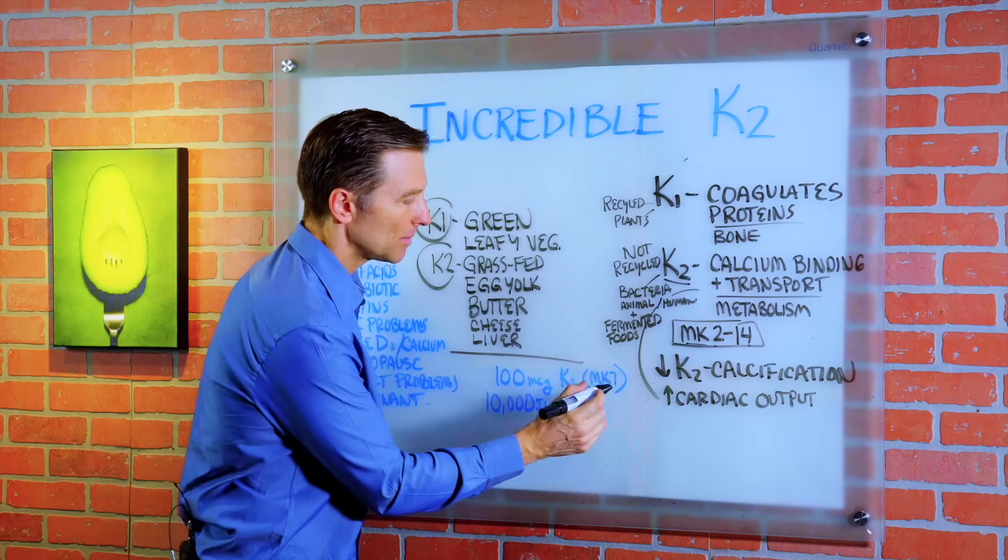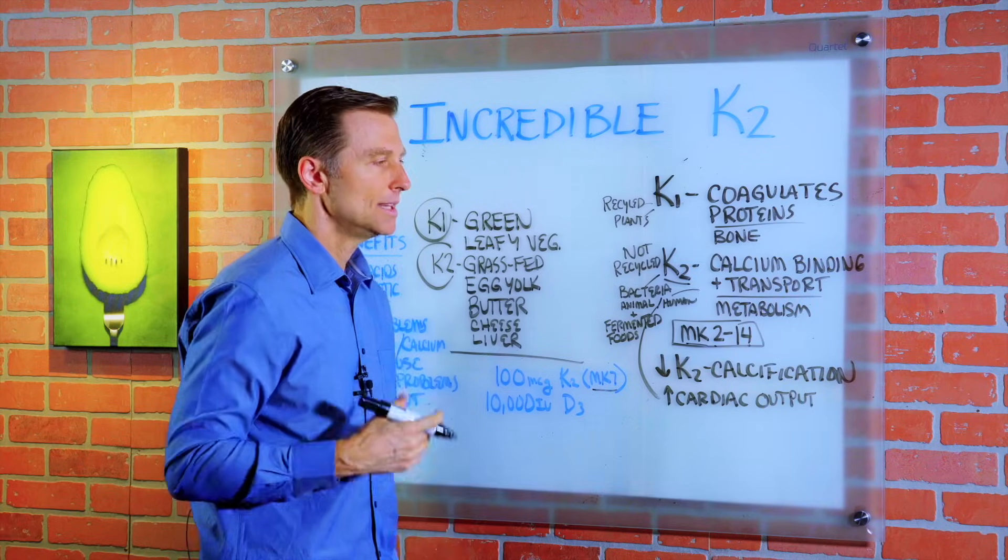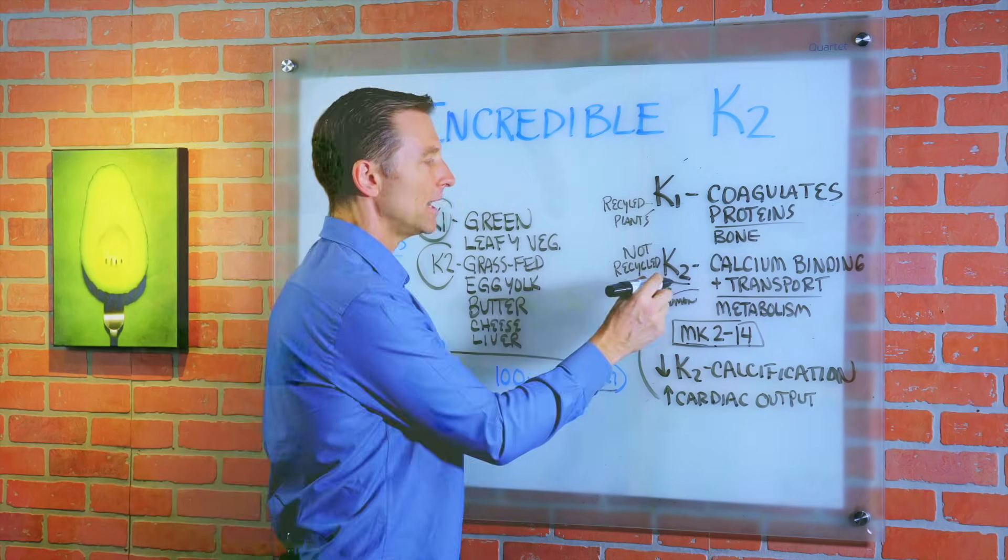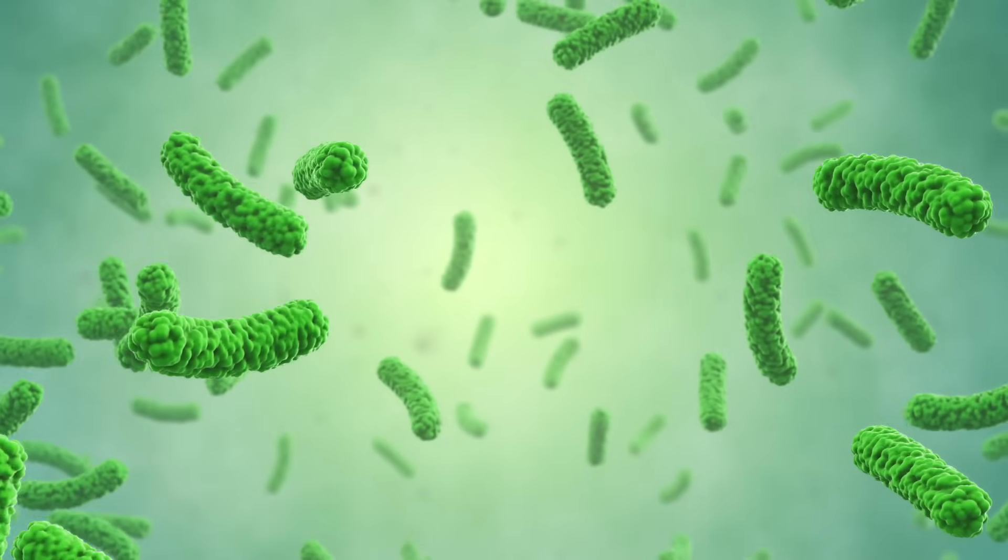The one that I recommend is MK7 because it's natural, it's not synthetic. But vitamin K2 originates from bacteria in animals and humans. We can actually make a little bit of it.